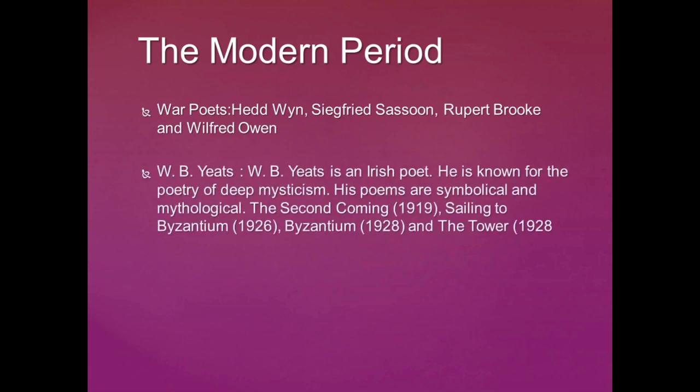The modern period also saw two giants in poetry: W.B. Yeats and T.S. Eliot. W.B. Yeats is an Irish poet known for poetry of deep mysticism. His poems are symbolical and mythological. The Second Coming, Sailing to Byzantium, Byzantium, and The Tower are his masterpieces.